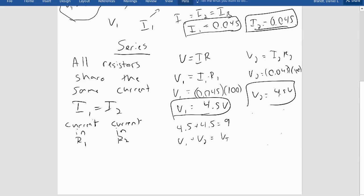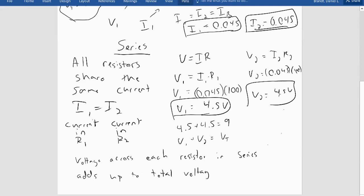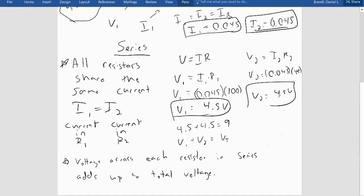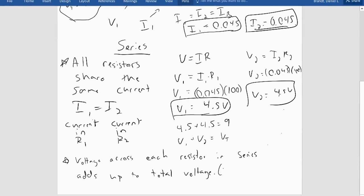So for series: all resistors share the same current, and voltage across each resistor adds up to the total voltage. We also see the voltages are equal here — V1 equals V2 — but this isn't always true. Let me show you an example where it's not.